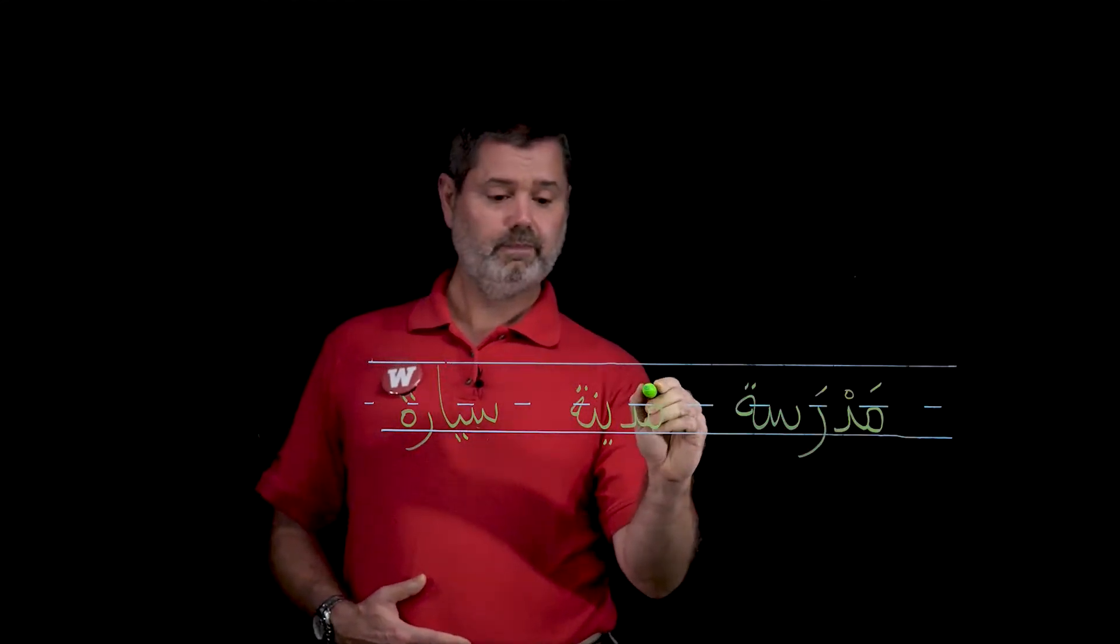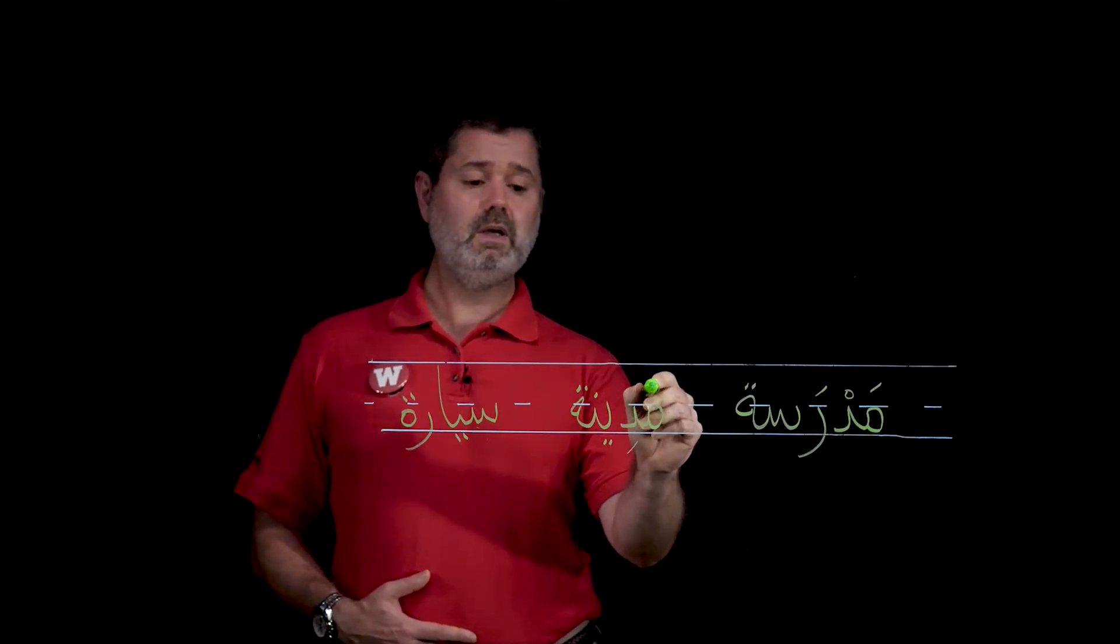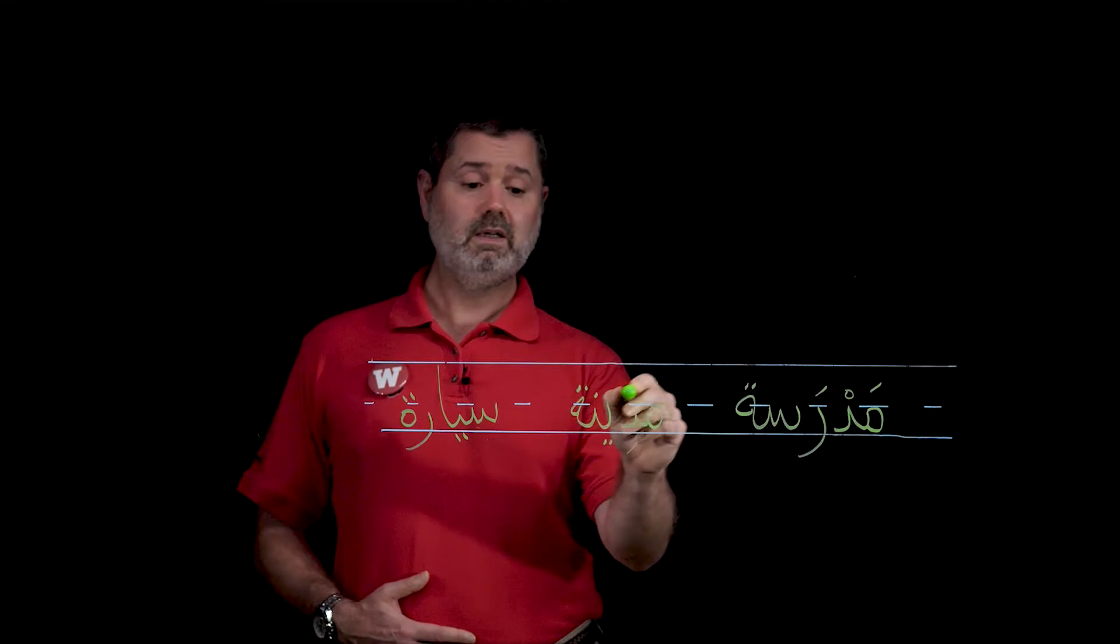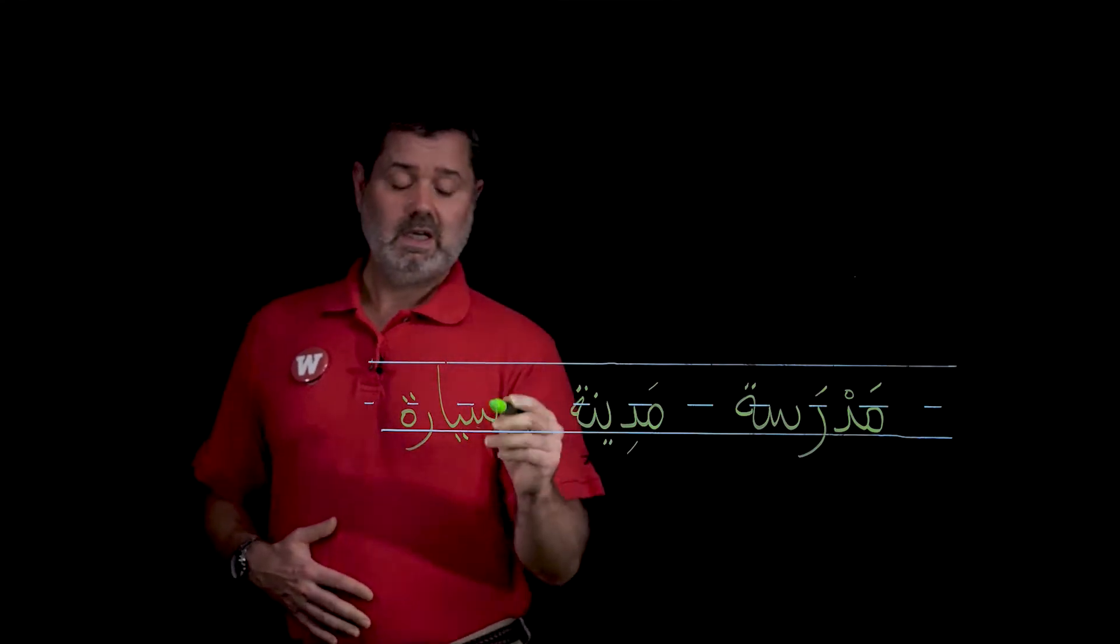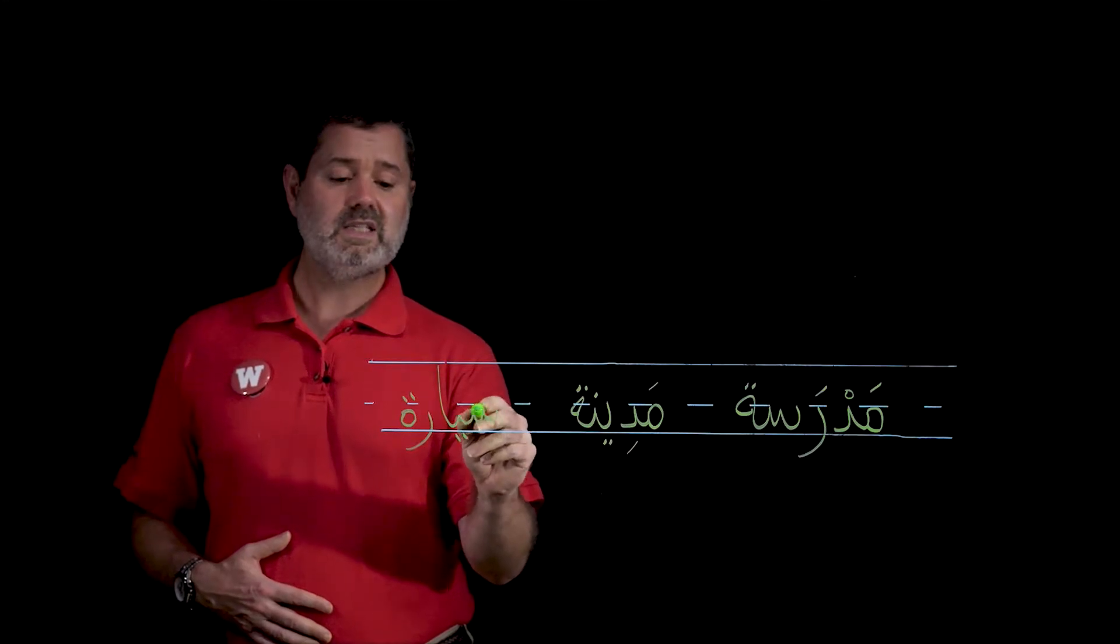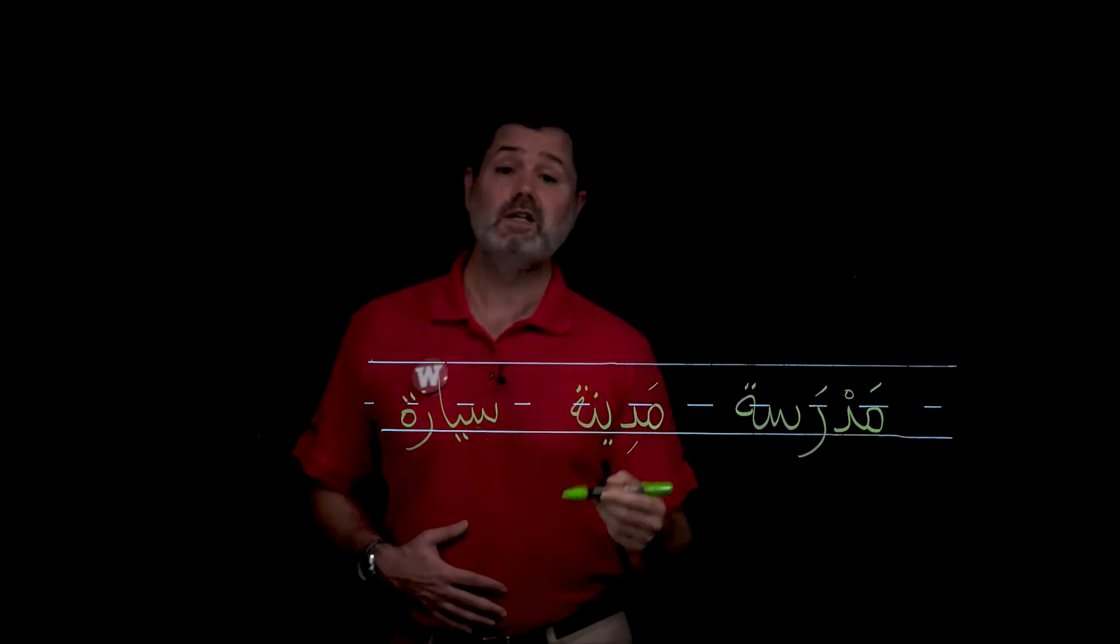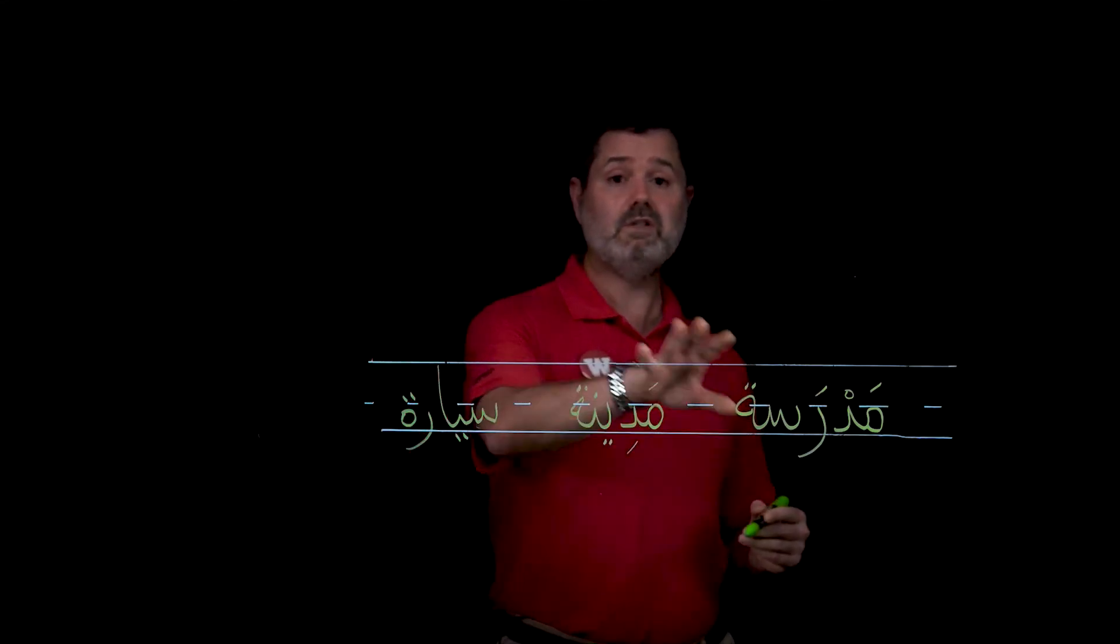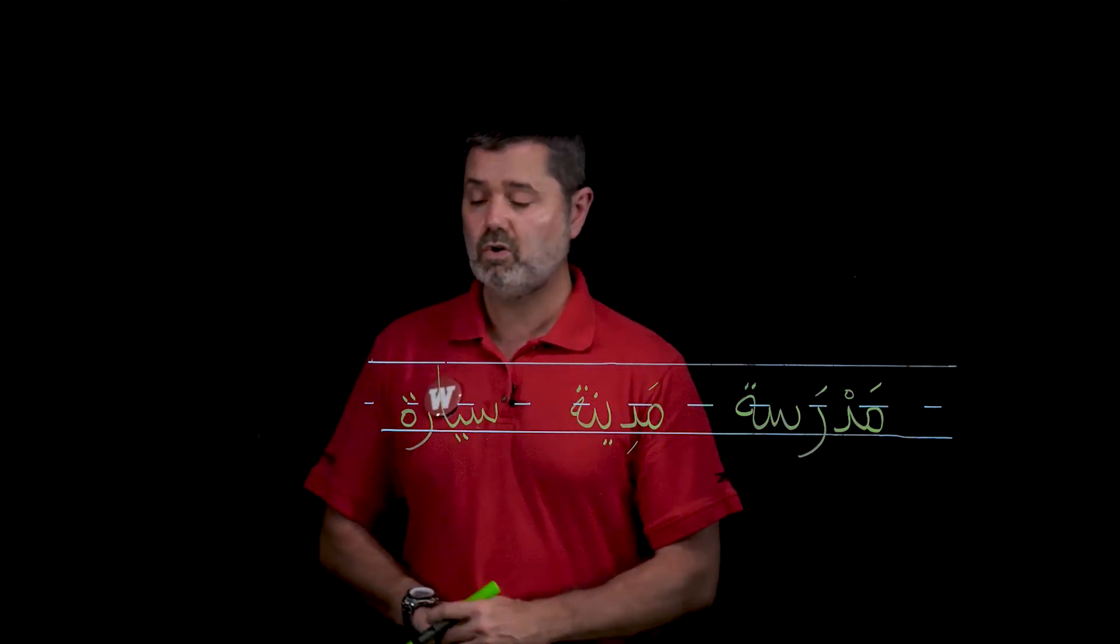Here's a very common word. Madina means city. Here's another one. This is a little bit tricky pronunciation. This is a diphthong. Say sayya, sayyara. Sayyara is car. These are all very common words and you can see they all end in tamabuta which means they are all feminine. And if a word's feminine, we're going to have to do certain things with it. But this is a very important thing to recognize.